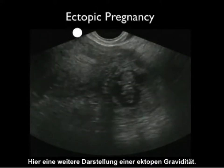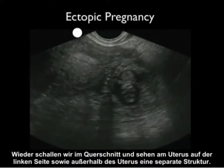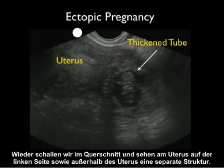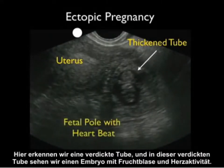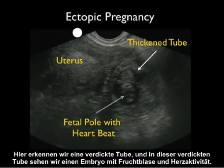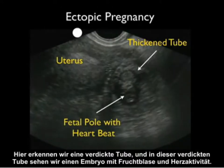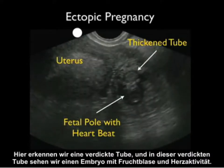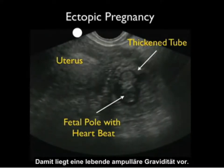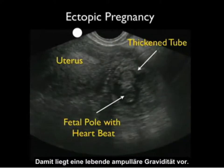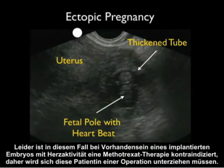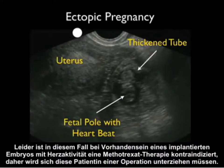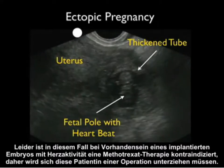Here's another presentation of an ectopic pregnancy. Scanning in a short axis plane, we see the uterus to the left and a separate structure outside the uterus. We note the presence of a thickened fallopian tube, and inside it we see a fetal pole with a heartbeat, consistent with a live ampullary ectopic pregnancy. Unfortunately, the presence of a fetal pole with a heartbeat is a contraindication to methotrexate therapy, and this patient will need to undergo surgery.